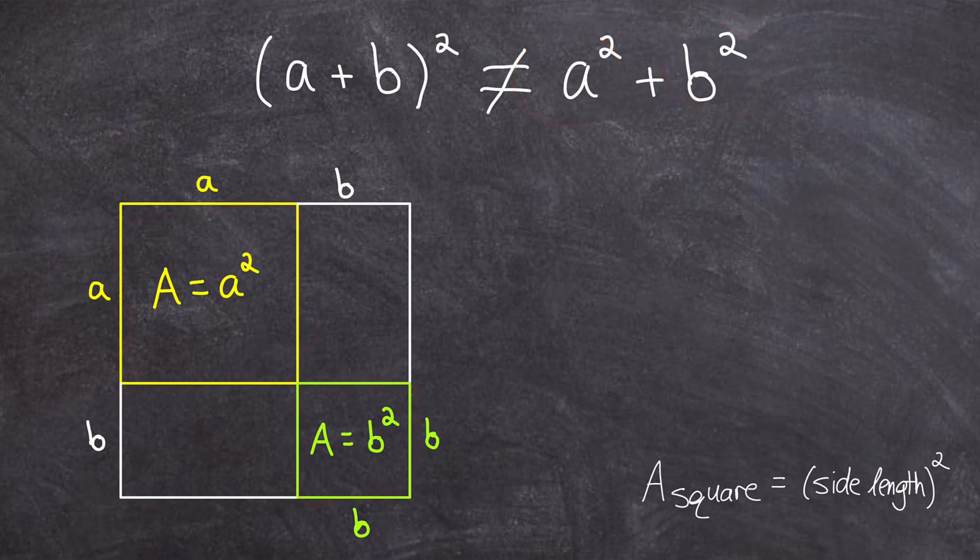To make the statement true, we would have to add in the area of these two rectangles. And those two rectangles, their dimensions are both b by a, which means both of their areas are both a times b.